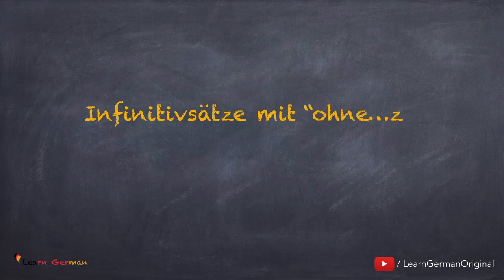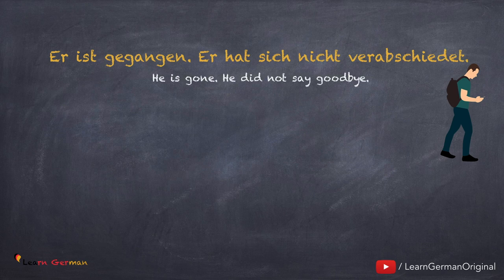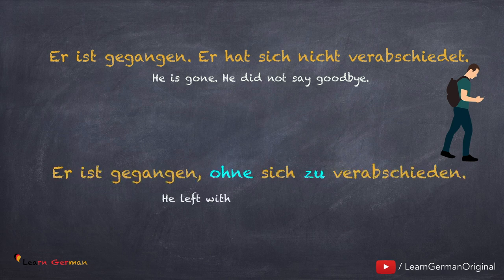Und jetzt kommen wir zu Infinitivsätzen oder Nebensätzen mit ohne zu. Hier ist ein Beispiel: Er ist gegangen. Er hat sich nicht verabschiedet. Auch hier ist eine Aktion, die nicht erwartet ist — er ist gegangen, aber er hat sich nicht verabschiedet. Also, dann kann man sagen: Er ist gegangen, ohne sich zu verabschieden.